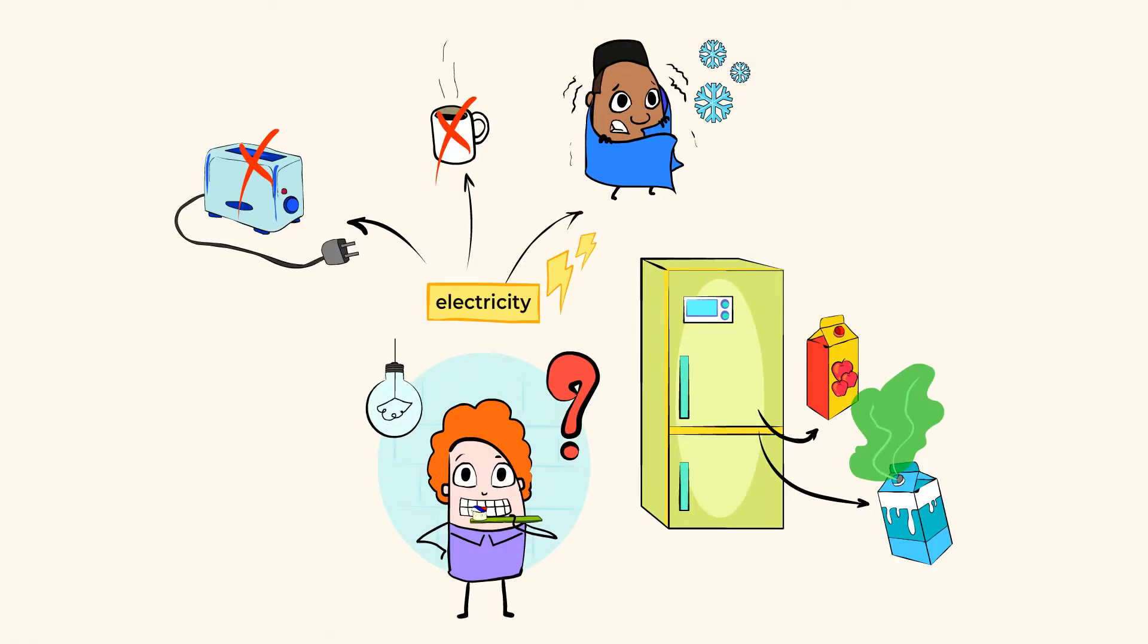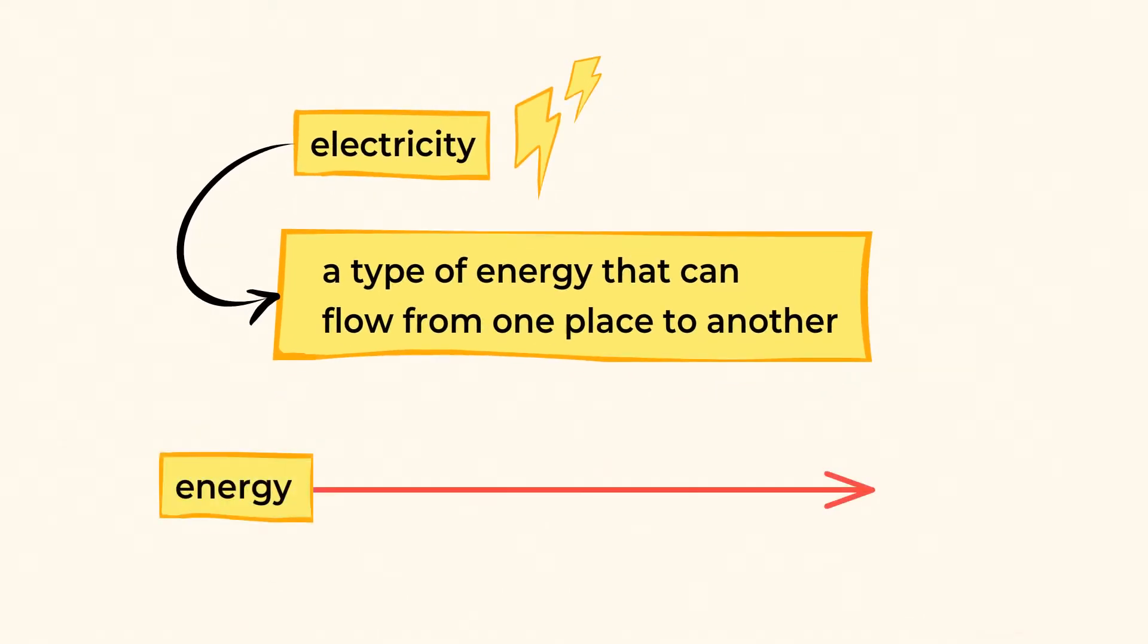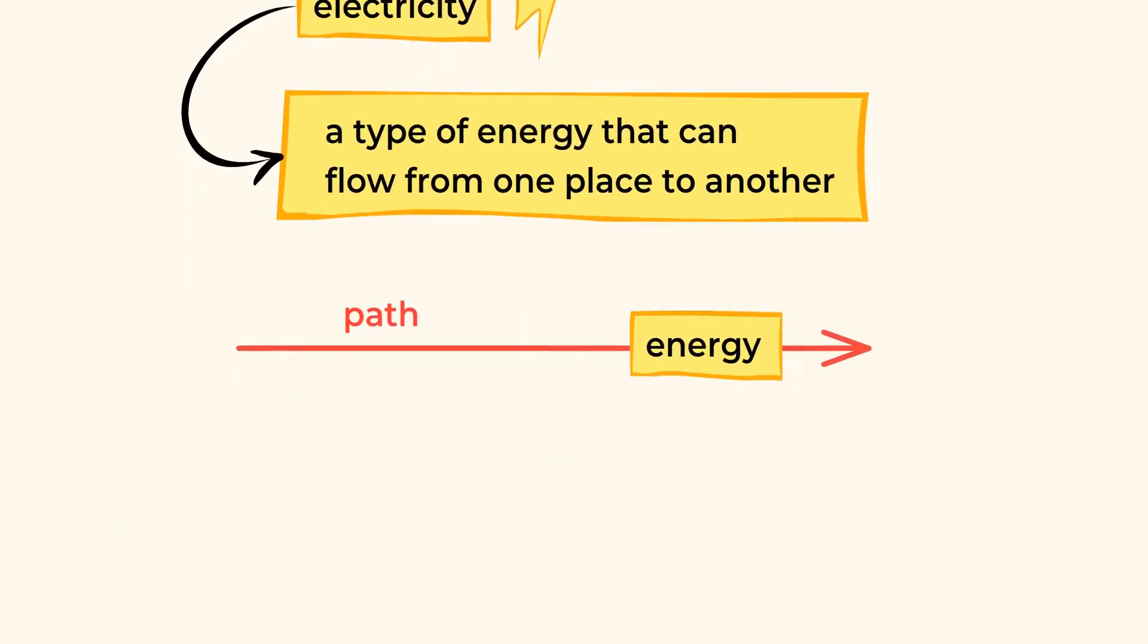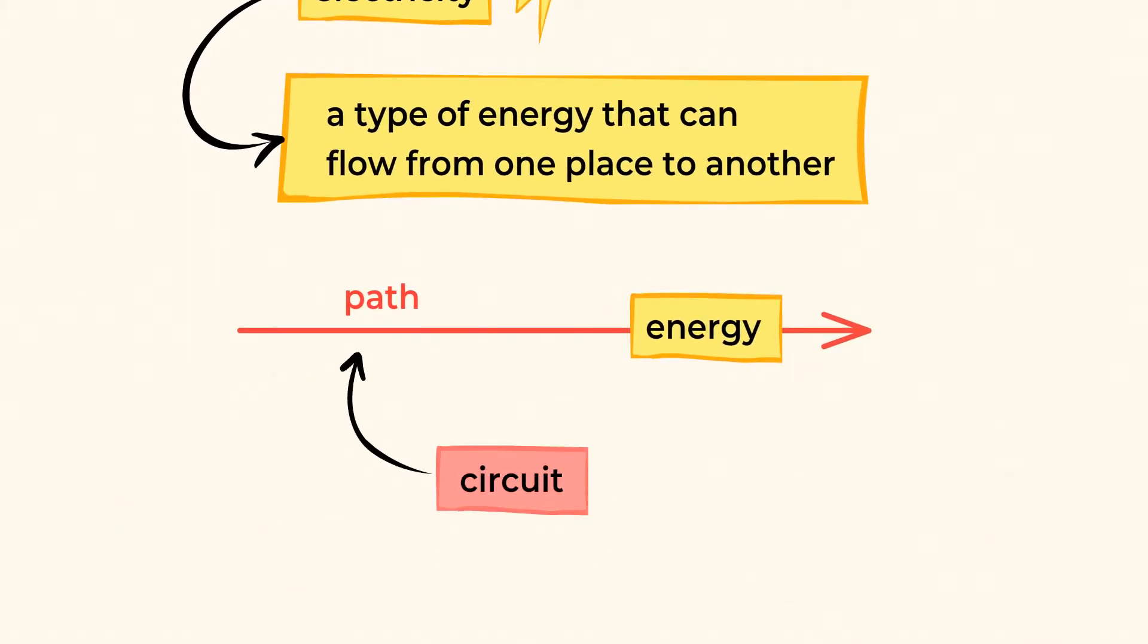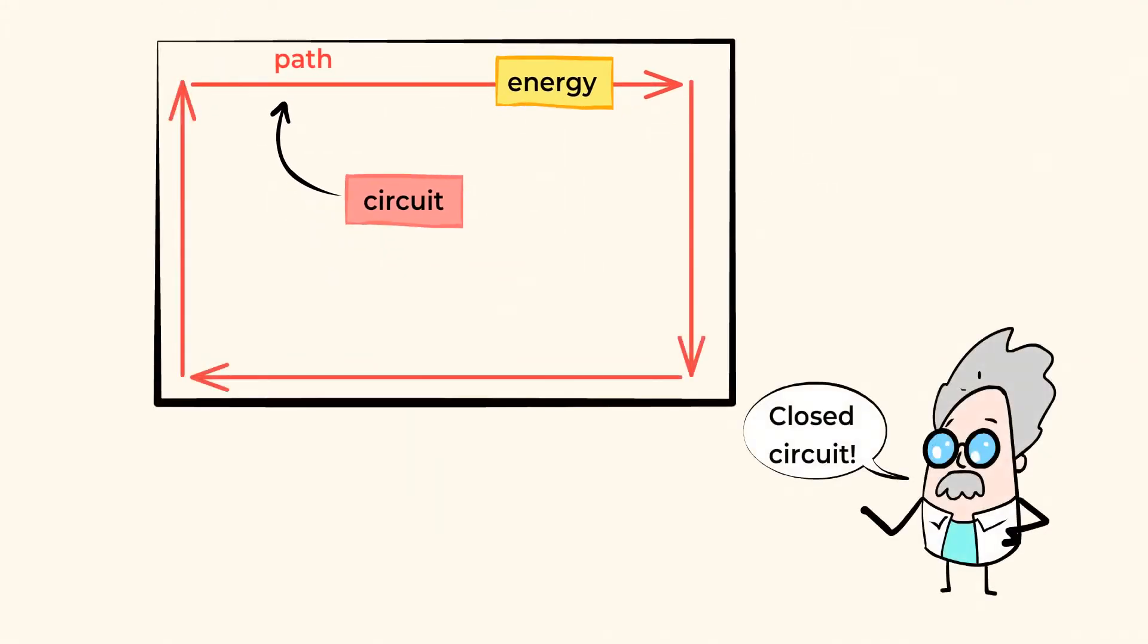But what exactly is electricity? Basically, it's a type of energy that can flow from one place to another. This energy flows and travels along a path, also known as a circuit. In order for electricity to constantly flow, the circuit needs to be closed. Think of it like a loop.